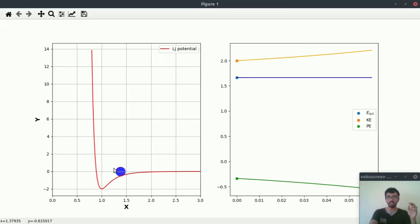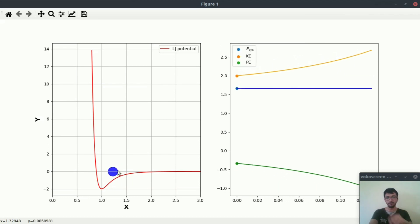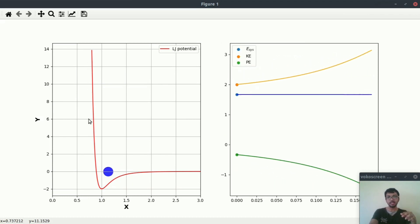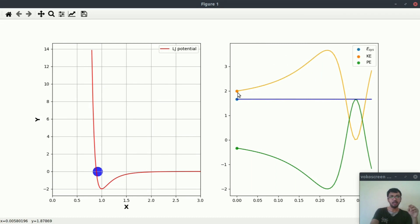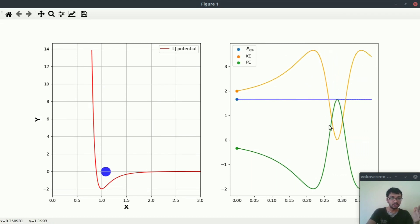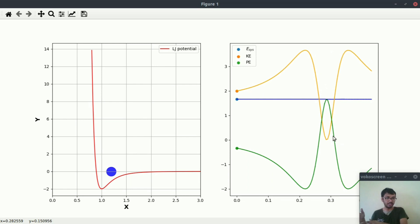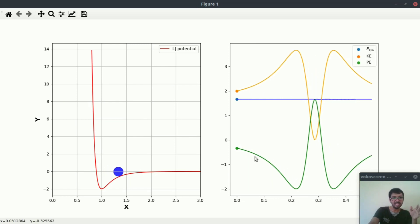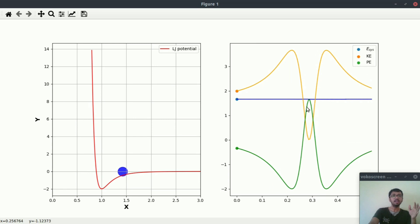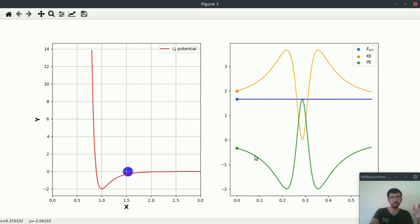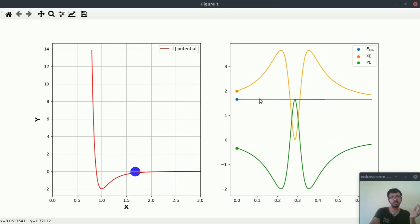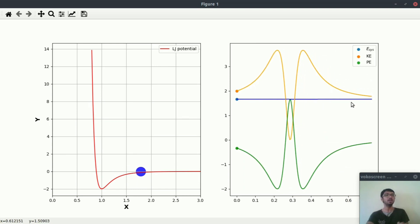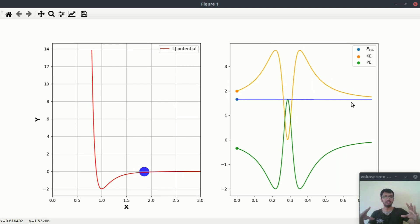Here's our light particle, our softball, and this red curve represents the LJ potential. Similar to before, this orange curve represents the kinetic energy of the system and this green curve represents the potential energy of system. And in this case also, this constant green curve represents the total energy of the system.